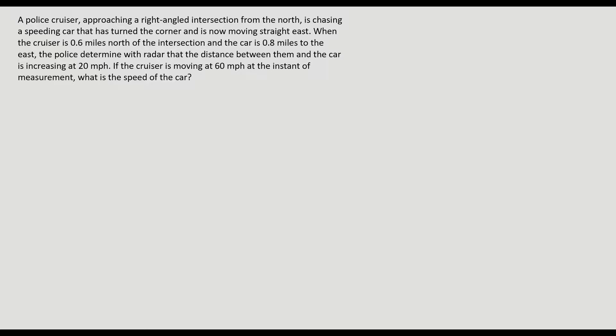So as I read through this problem, I'm going to try and create my diagram right along with it. So we have a police cruiser approaching a right angled intersection from the north. So we have an intersection, the police is coming from the north, driving like that. When a speeding car that has turned the corner is now moving straight east. So let's see, never eat shredded wheats, this car is now driving here and going east.